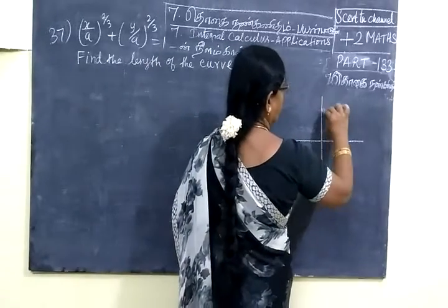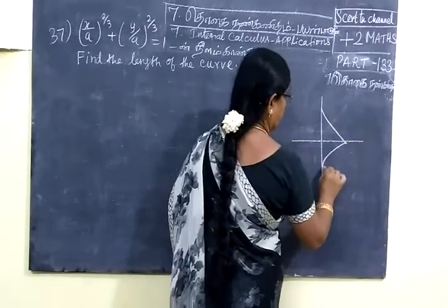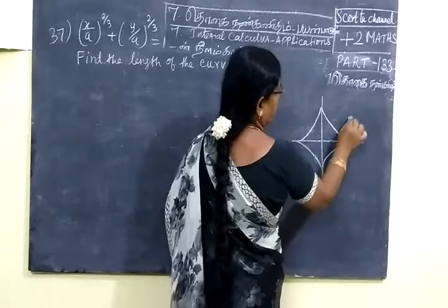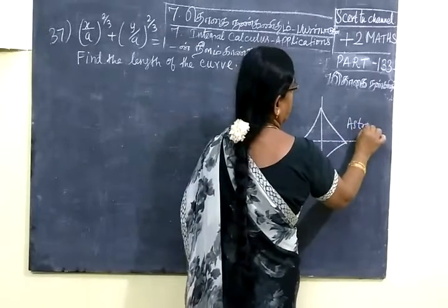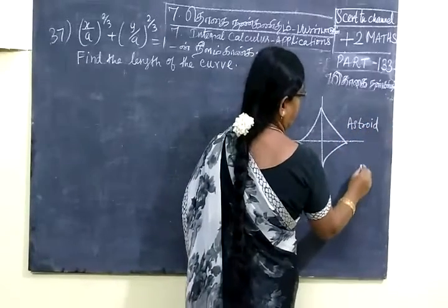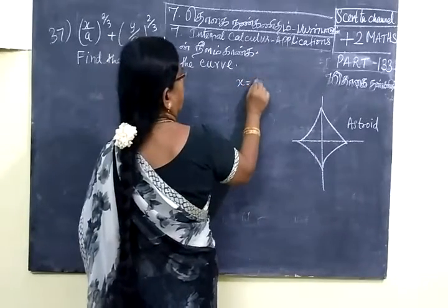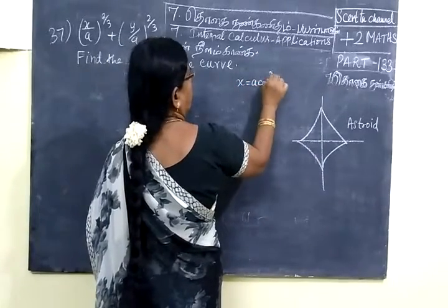This is asteroid. This is t value. This is parametric form. x is equal to a cos³ t.